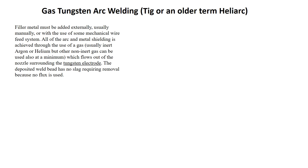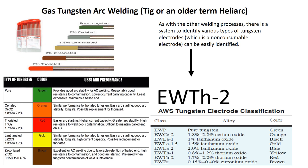Usually an inert gas such as argon or helium is used, but other non-inert gases can be used, such as CO2 or oxygen, which flows out of the nozzle surrounding the tungsten electrode. The deposited weld bead has no slag requiring removal because no flux is being used. As with other welding processes, there is a system to identify various types of tungsten electrodes, which is a non-consumable electrode. For example, EWTH-2.